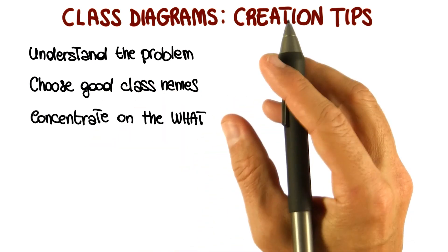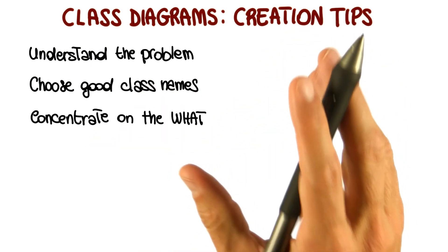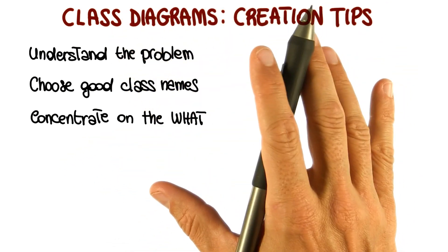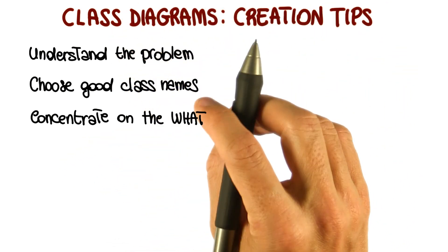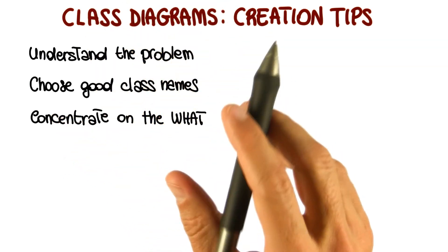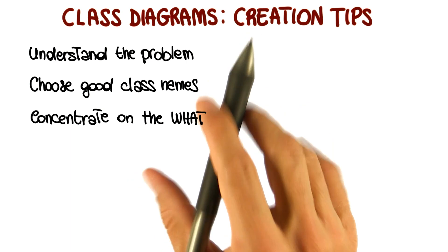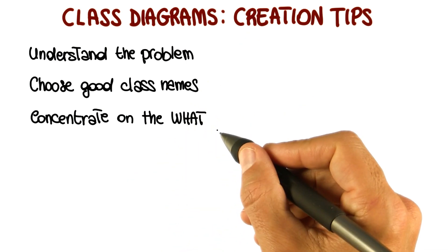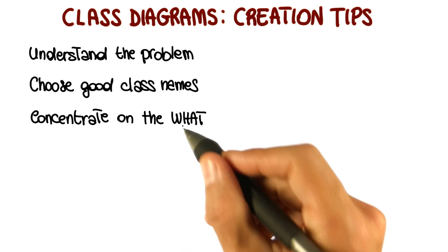Third tip, concentrate on the what. So here in the class diagram, we're just representing the structure of the system. We're representing what is in the system. What are the entities? What are the characteristics of the entities? We're not focusing at all on how things are done. So be careful, don't think about the how, just think about the what.